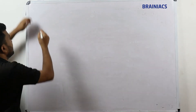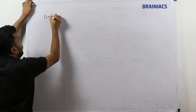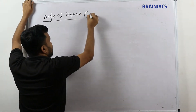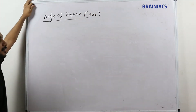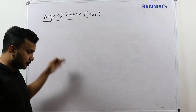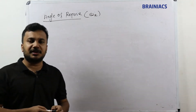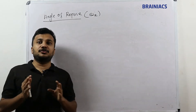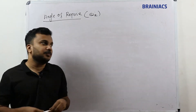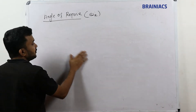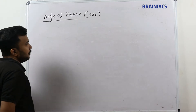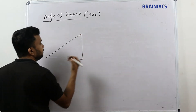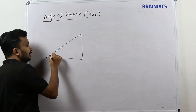The next term is Angle of Repose, represented as theta_r. This term appears in exam questions related to friction alongside Angle of Friction — do not confuse the two, they are completely different. Angle of Repose is typically used with an inclined plane or wedge.